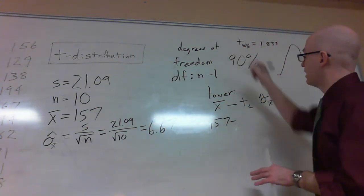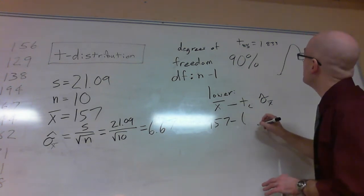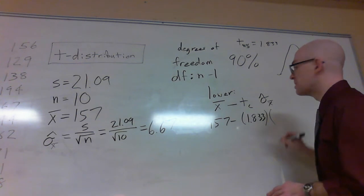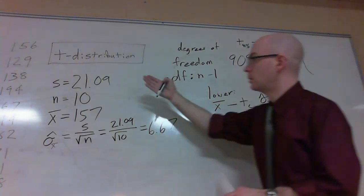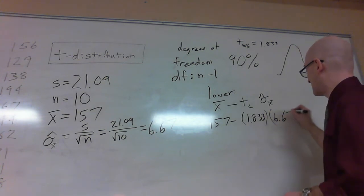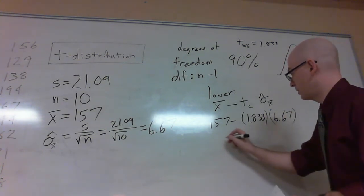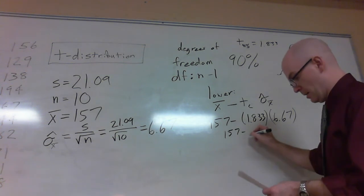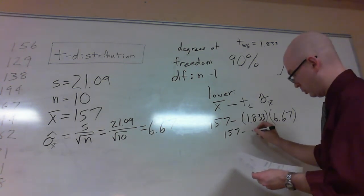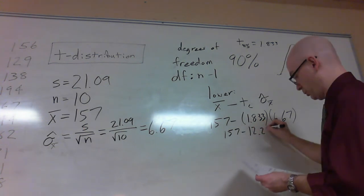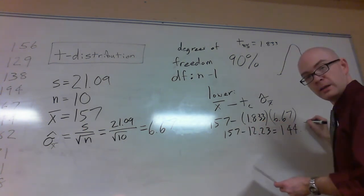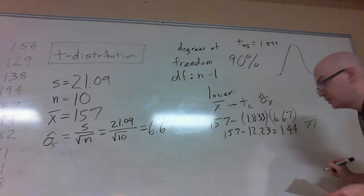I'm just about done. X-bar is 157 minus my t-score here of 1.833. What is my standard error? 6.67. Calculate it out. This becomes 157 minus 12.23, which gives me 144.77. And I'm still in the frame. Excellent.